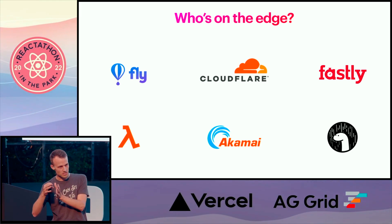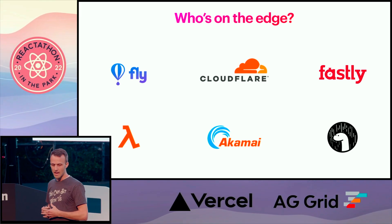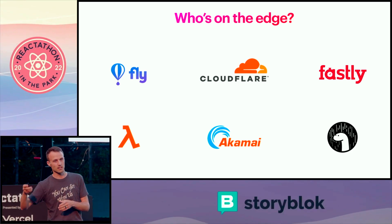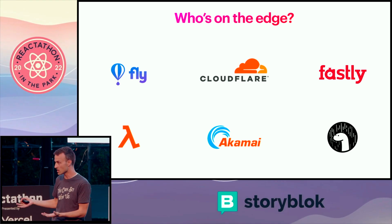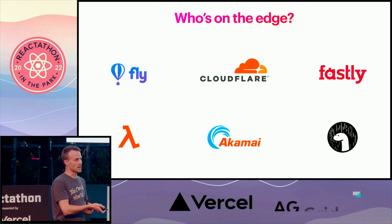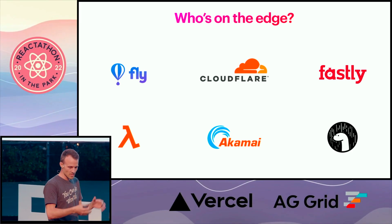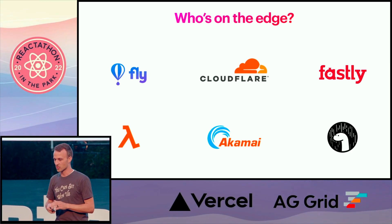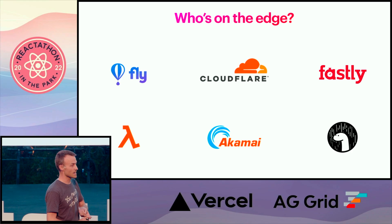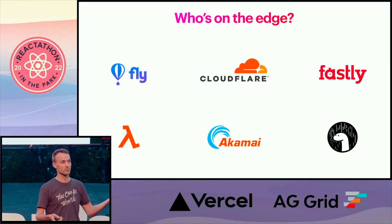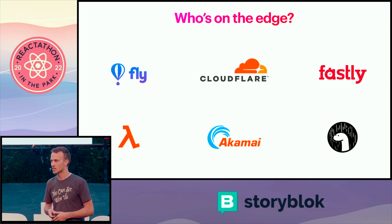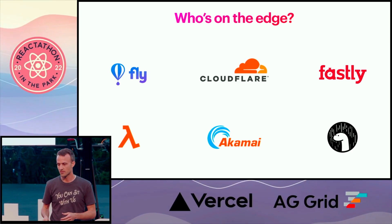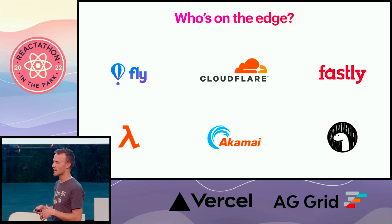Cloudflare, Fastly, and Akamai are CDNs that said, we've got servers all over — let's let people run code on those servers. They have their various different APIs for that. DenoDeploy is similar to Fly except they're running Deno. Lambda at Edge is like a serverless platform but at the edge, so it's regionless. You also have data at the edge — one of our sponsors, FaunaDB, is doing data at the edge. Netlify and Vercel are wrapping some of these services. Lots of people are getting into the edge game.